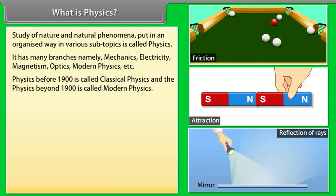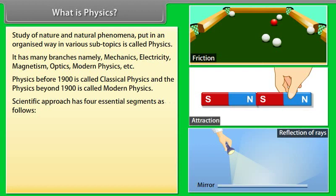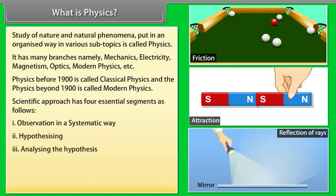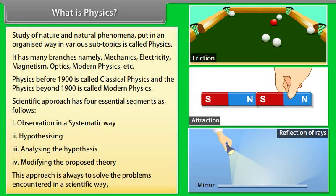Scientific approach has four essential segments as follows: Number 1, observation in a systematic way. Number 2, hypothesizing. Number 3, analyzing the hypothesis. Number 4, modifying the proposed theory. This approach is always to solve the problems encountered in a scientific way.